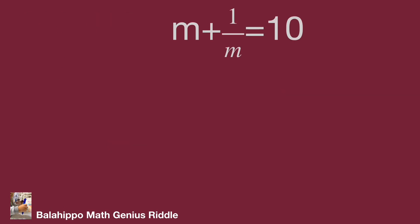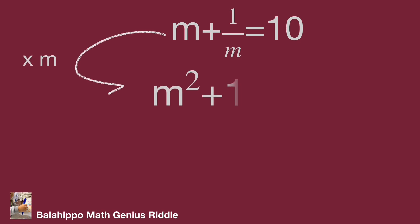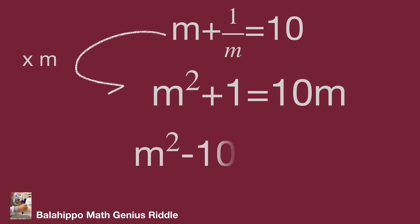Multiply both sides of the equation by m. The equation becomes m² + 1 = 10m. Rearranging gives m² − 10m + 1 = 0.